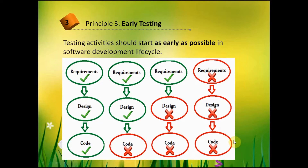Option four: a mistake was made in the requirements. The functionality should be completely different, and all efforts made in design and coding were useless — we end up with a product with wrong functionality. Fixing this takes 30 days. If testing activities had started during the requirements gathering stage and testers identified the mistake, all design and coding efforts would not have been wasted. So it is important that testing activities start as soon as possible in the software development life cycle.